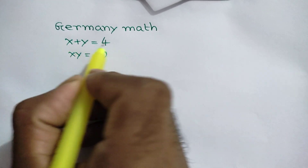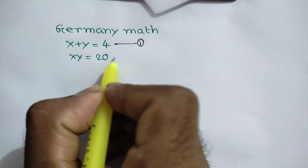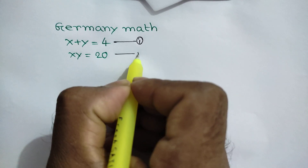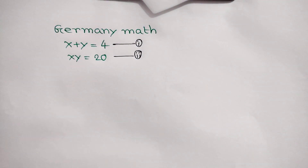x plus y is equal to 4 — this is called equation number 1. And xy is equal to 20 — this is called equation number 2.